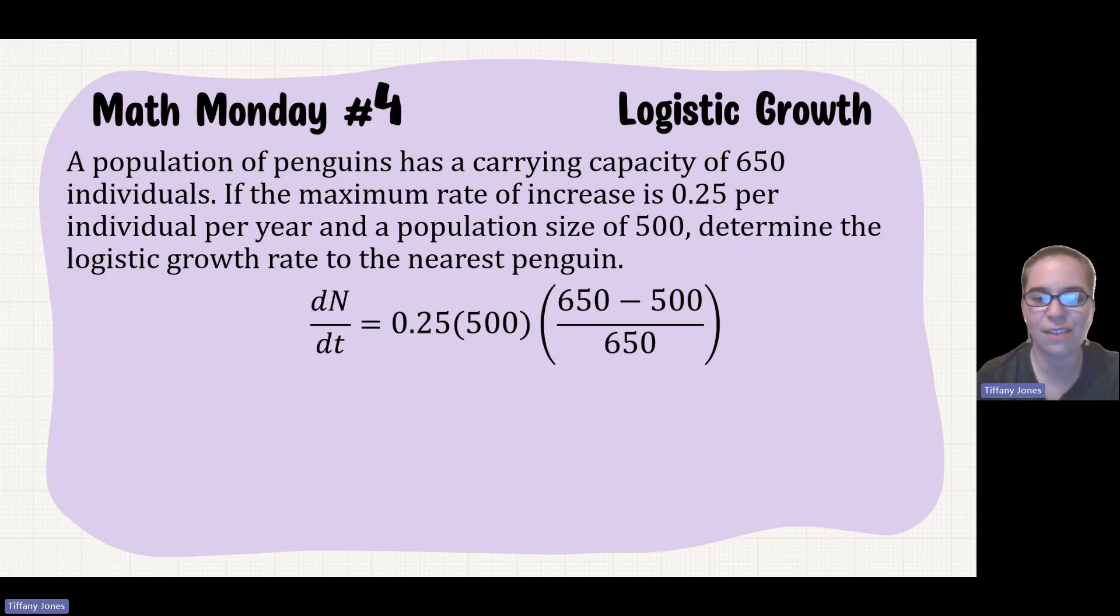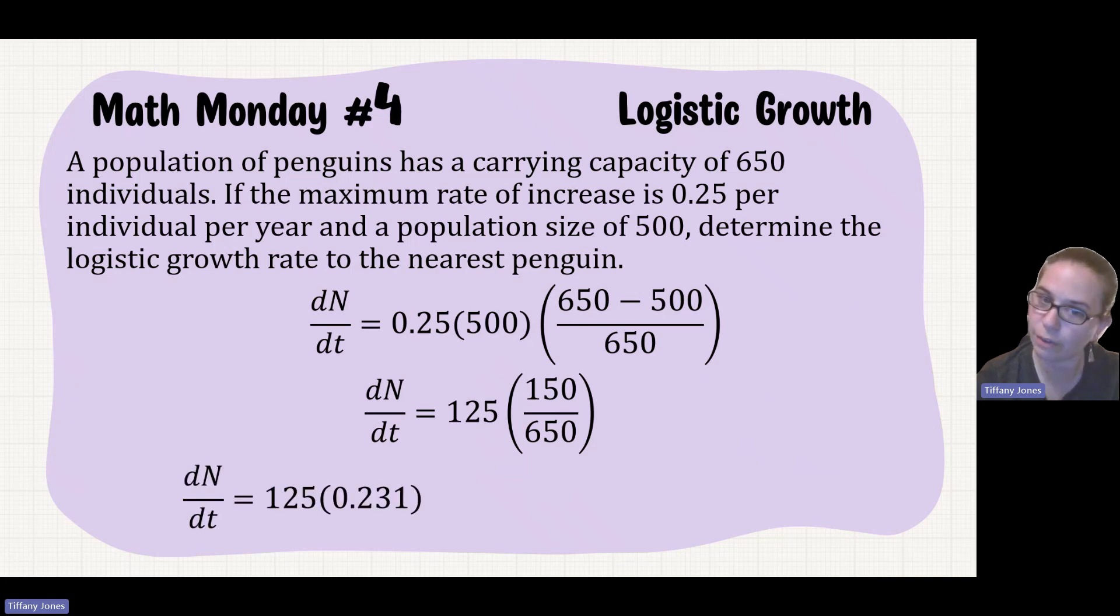If we multiply 0.25 times 500, I get 125. 650 minus 500 gives me 150, and then we're going to divide that by 650. When you divide 150 by 650, you're going to get 0.231. When you multiply that times 125, you're going to get 28.85.